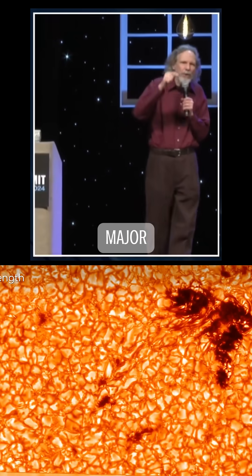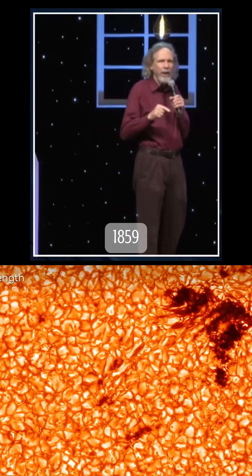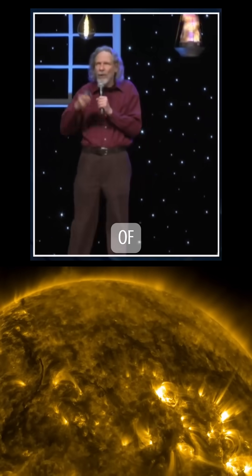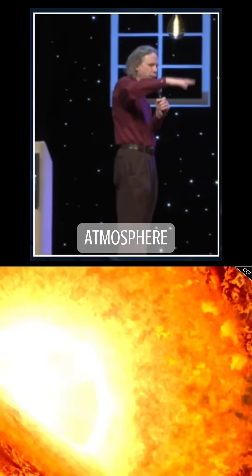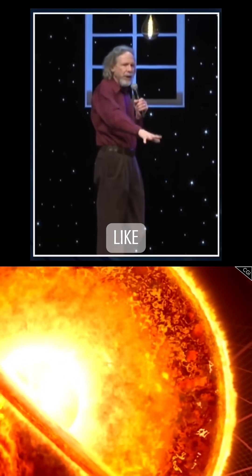There was a major one in 1859 known as the Carrington Event. So you can think of solar plasma and the solar wind coming in. It hits the atmosphere and forms things like the auroras, the aurora borealis, aurora australis.